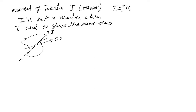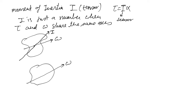You are free to choose any axis for I, and the end result will not change, but you can simplify things. The tensor form becomes a scalar — just a number — when you choose omega and I along the same axis. You choose your axis such that I is calculated around that axis, which is also the axis for angular velocity or angular acceleration.